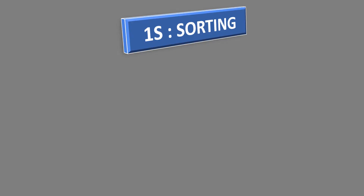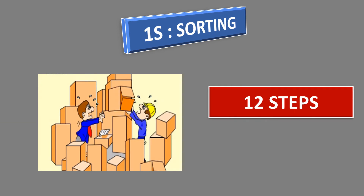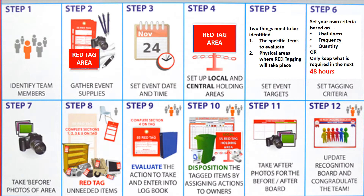Let us start with 1S, that is sorting. Sorting is done in 12 steps. Step 1: identify team members — we have already identified zones and zone leaders so there will be a team. Step 2: gather all required articles like red tags, camera, pen, writing pad, etc. Step 3: fix a date when red tagging will be done. Step 4: fix up the area for red tagging. Step 5: identify two things — the specific items to evaluate and the physical areas where red tagging will take place. Step 6: set your own criteria based on usefulness, frequency, and quantity, or only keep what is required in the next 48 hours.